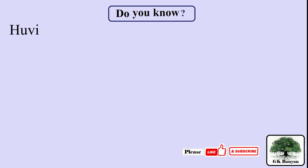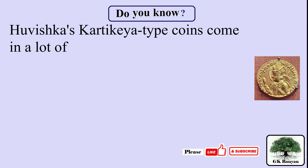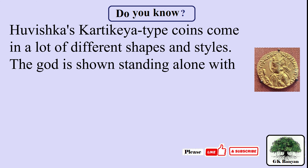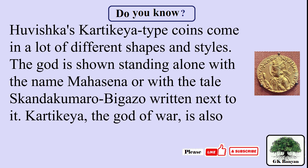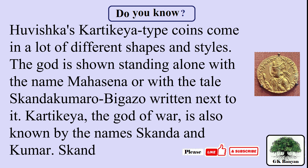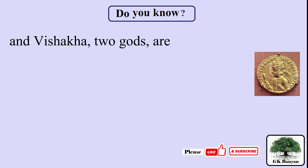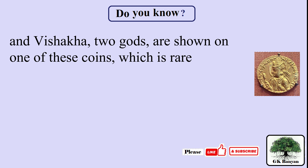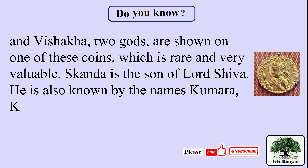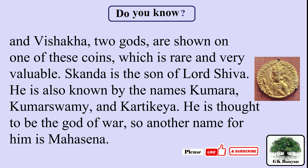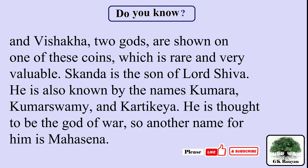The right answer is C. Huvishka. Huvishka's Karthikeya-type coins come in many different shapes and styles. The god is shown standing alone with the name Mahasena, or with the title Skanda-Kumaro written next to it. Karthikeya, the god of war, is also known by the names Skanda and Kumar. Skanda is the son of Lord Shiva, also known as Kumaraswami and Karthikeya, and is thought to be the god of war — hence another name for him is Mahasena.